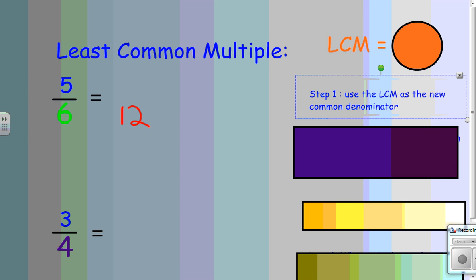So, I'm going to use that least common multiple of twelve as my new denominator. This will help me make two common denominator equivalent fractions that I can then compare.